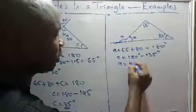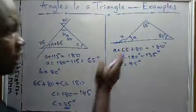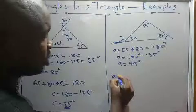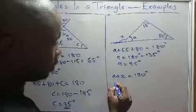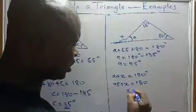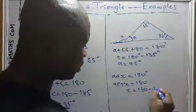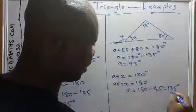Now, if A gives you 45 degree, A plus X, and goes on the straight line, gives you 180 degree. So A is already 45 plus X gives you 180 degree. So X gives you 180 minus 45 equals to 135 degree.